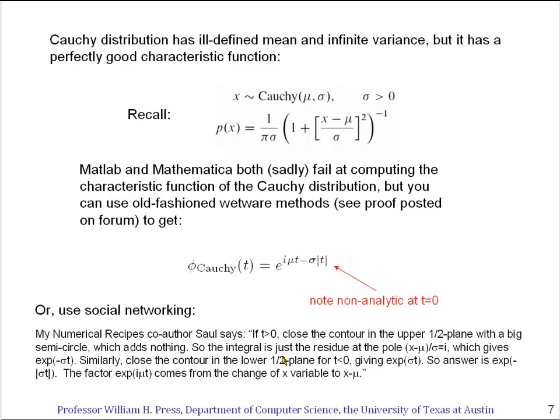And Saul writes back and says, if t is greater than zero, you close the contour in the upper half plane in a big semicircle, which adds nothing. So the integral is just the residue of the pole given here, which gives e to the minus sigma t.